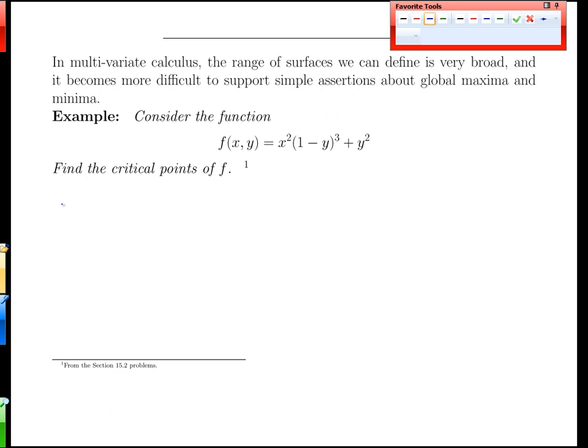To find the critical points, we're going to need the derivatives, the two partial derivatives with respect to x and y. The x derivative will be 2x(1-y)³. The y derivative will be x² times (1-y)² times 3 for bringing the 3 down, plus 2y.